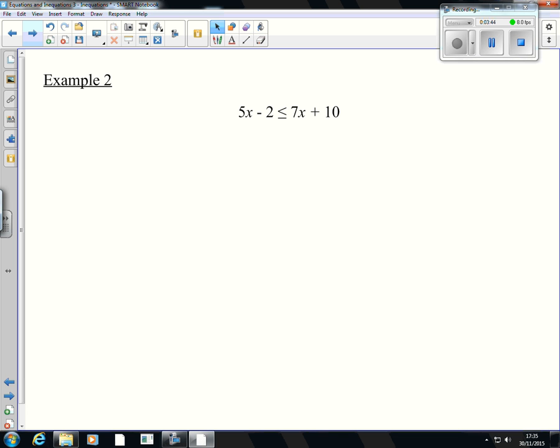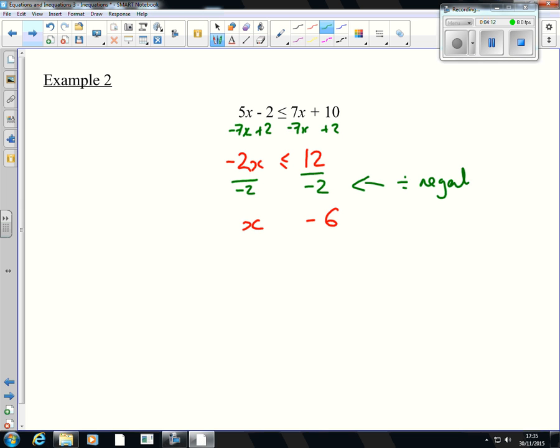Here's an example. This can go back in your numbers. We're going to do the same thing, add 2, add 2, subtract 7x, subtract 7x, which gives me -2x ≤ 12. The next step is to divide by negative 2. So that leaves me with x, and that leaves me with negative 6. But, because I have divided by this negative, I need to flip my inequality. So, it was a less than or equal to, now it's going to be a greater than or equal to, and that's my final answer.